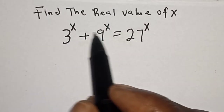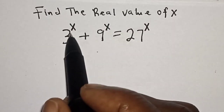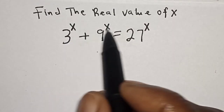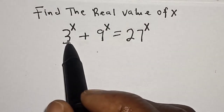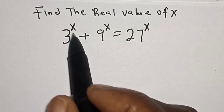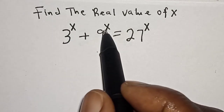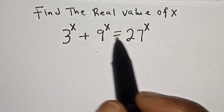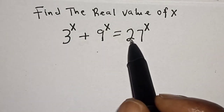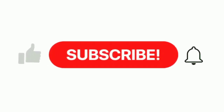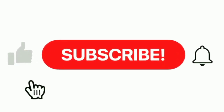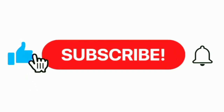Hello, welcome to Magis. In this class, we want to find the value of s from this equation: 3 raised to power s plus 9 raised to power s is equal to 27. Like, share, comment and subscribe.